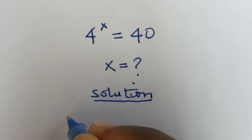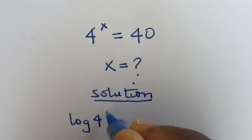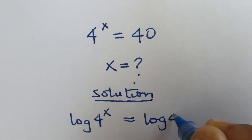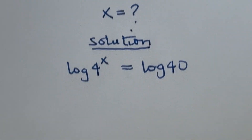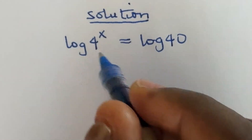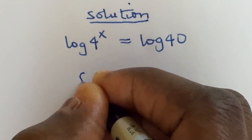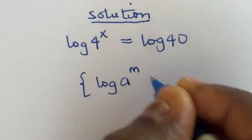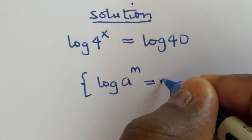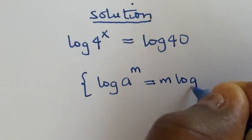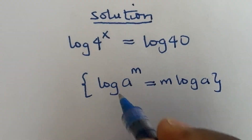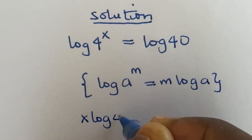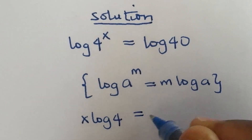Let us take the logarithm of both sides. This is of the form log a raised to power m, and it is expressed as m times log a. So log 4 raised to power x is going to be x log 4, then equal to log 40.